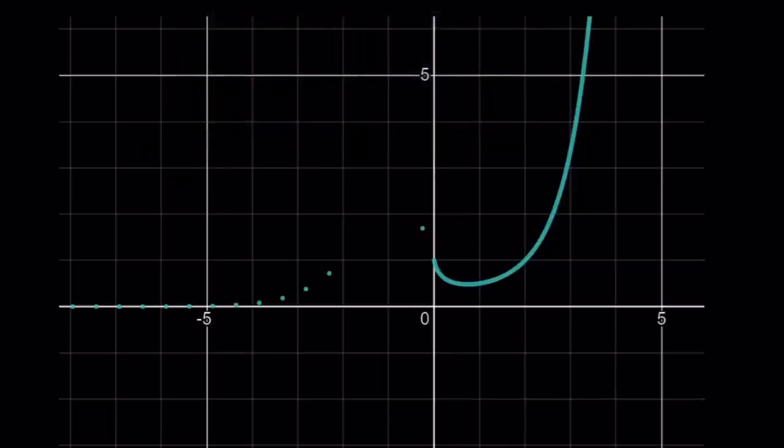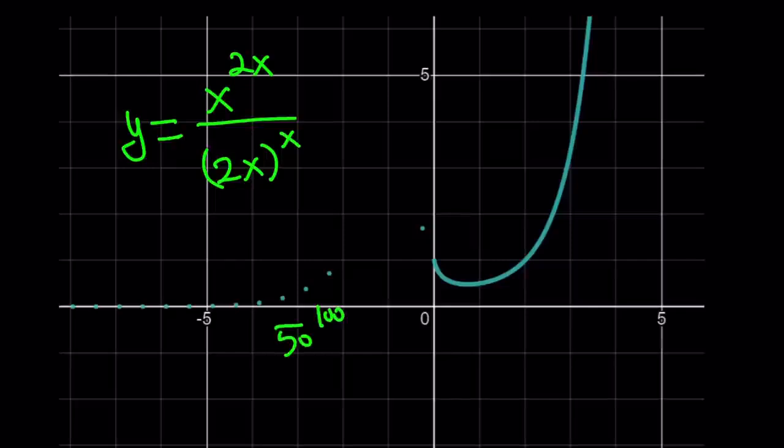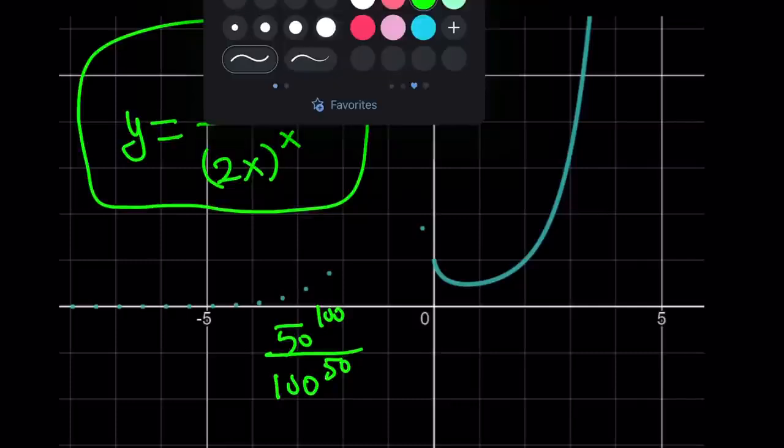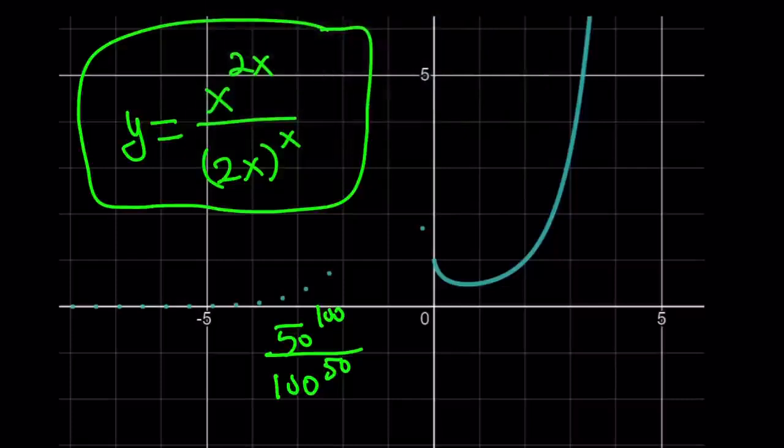Here's the graph of y equals x to the power 2x divided by 2x to the power x. Remember, our expression was 50 to the power 100 divided by 100 to the power 50. So for x equals 50, this is the graph we're looking at. But at x equals 50, this is going to be super duper steep, almost like a vertical line. So it's really hard to fit here unless you zoom out like crazy. Later on, we're also going to talk about how we can simplify this in general form. One of the cool things about generalizing something is that you have a formula that you can apply to many situations.